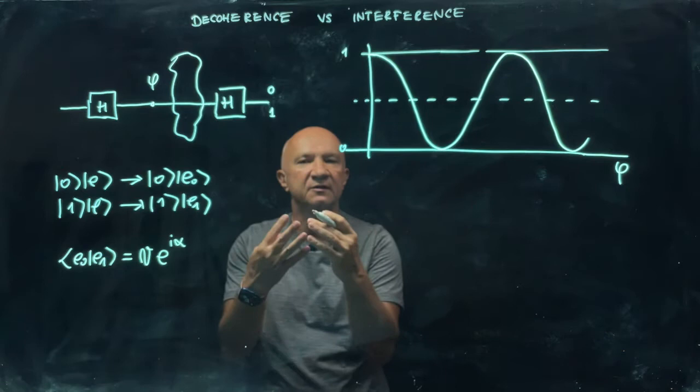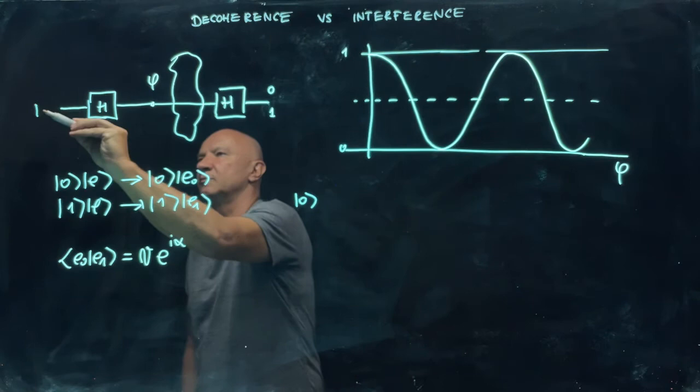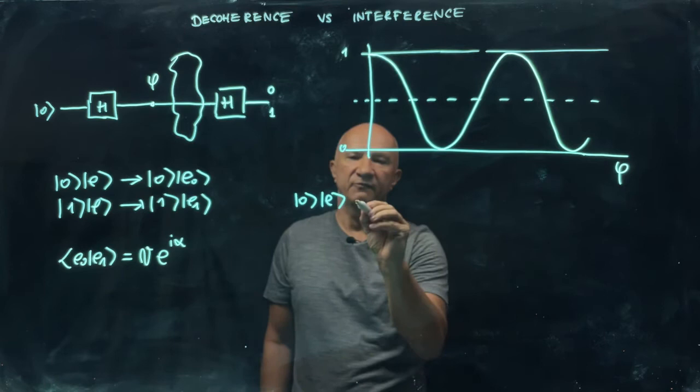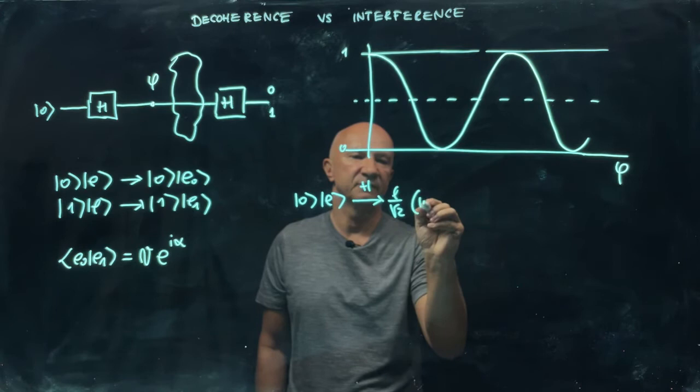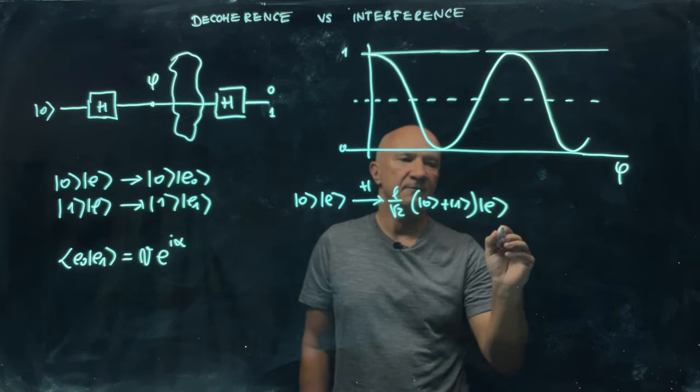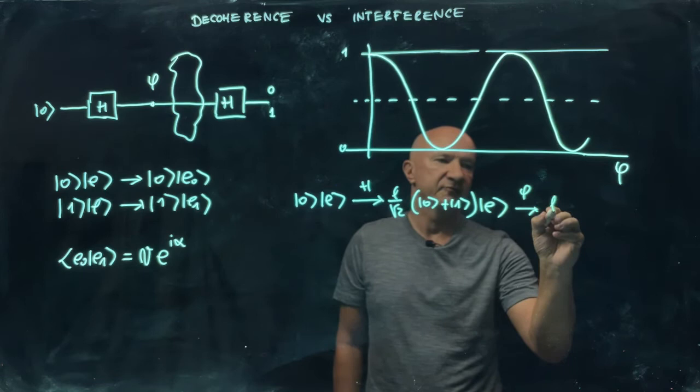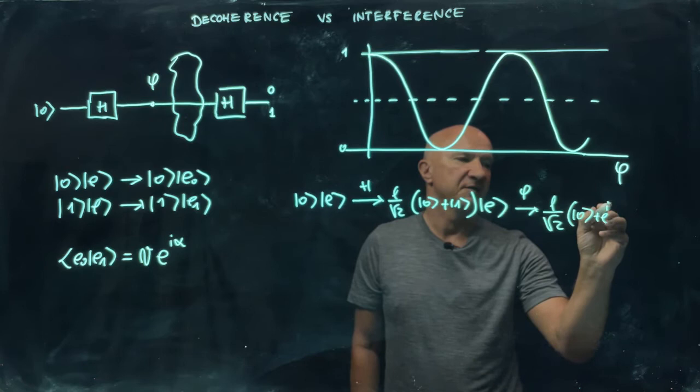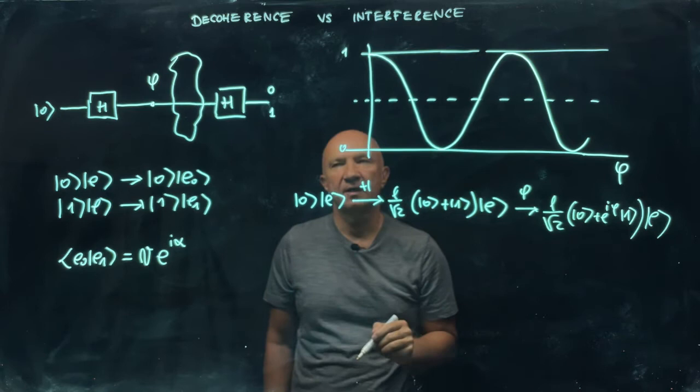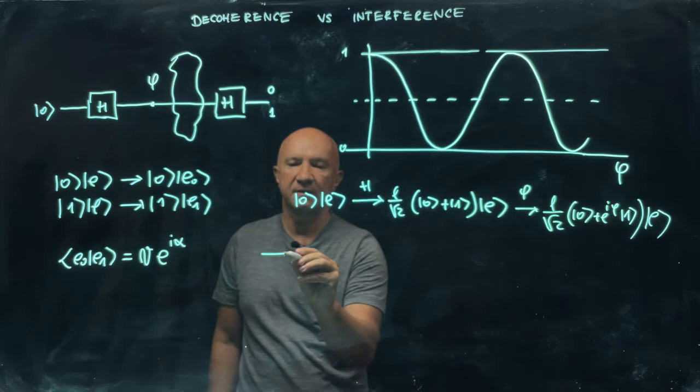Now, let's see what happens when we include the decoherence into the circuit. So we will step through the circuit. But now we have to include the environment as well. So we start in state zero. So our qubit is in state zero. The environment is in state E. After the first Hadamard gate, the qubit goes in a superposition of zero plus one. And the environment is in state E. And then we have the phase gate. So that we have the state of the qubit one over square root of two, zero plus e^(iφ) one. And the environment in state E.